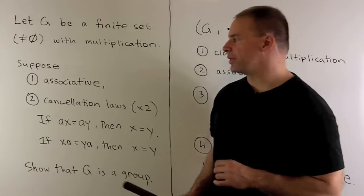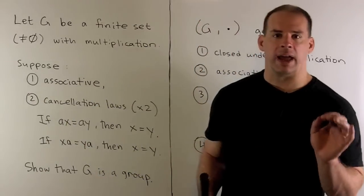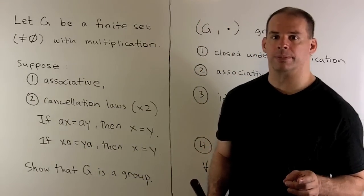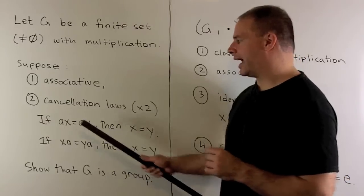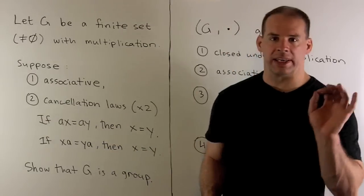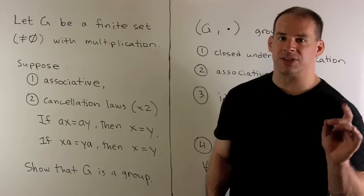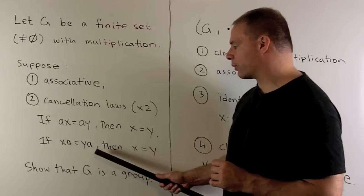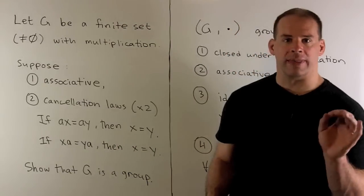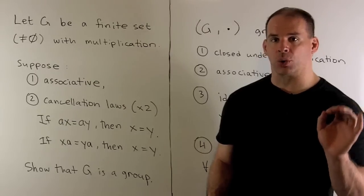We'll suppose that the multiplication is associative and that it has cancellation laws. So if I have AX equal to AY, we can cancel the A's and we're left with X equals Y. Similar statement holds if the A is on the right-hand side. With that, we want to show that G is a group.